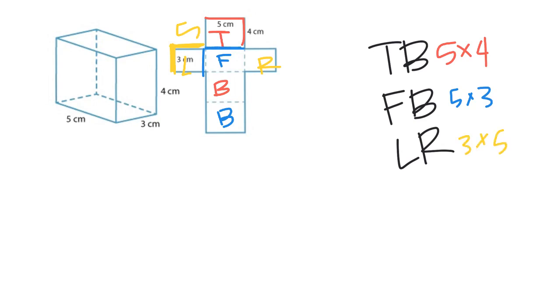So then I have five and four is 20, so top and bottom are each 20. Then I go to front and back, which is 15 and 15, and then my left and right were that same dimension, and I got 15 and 15.